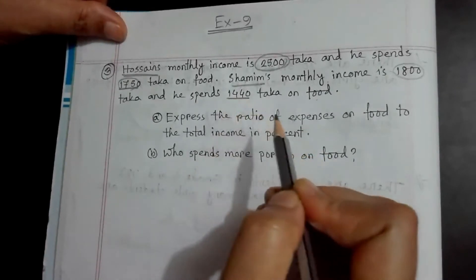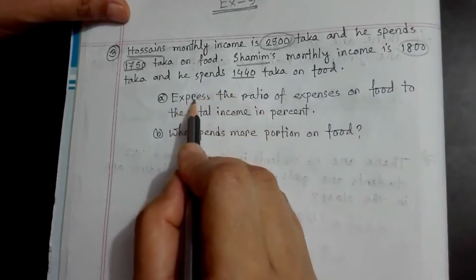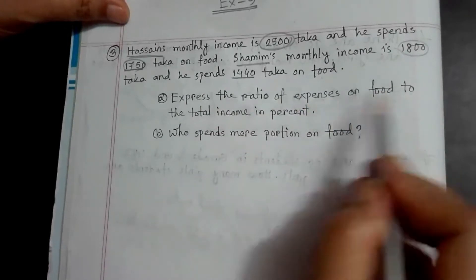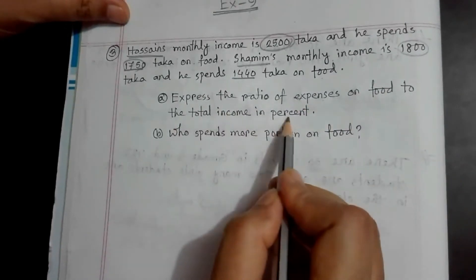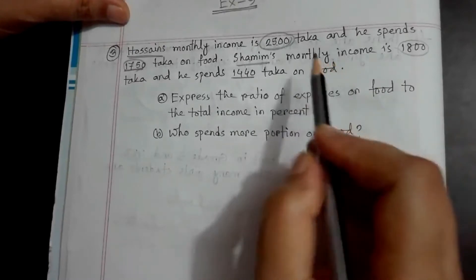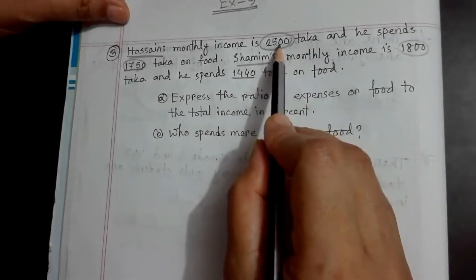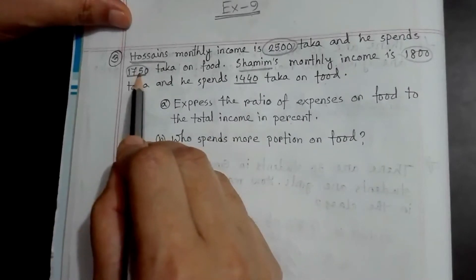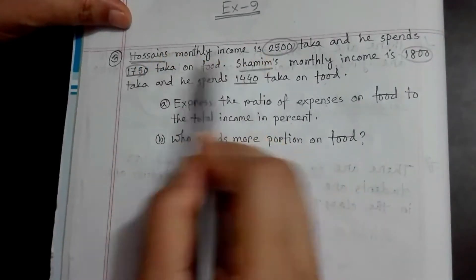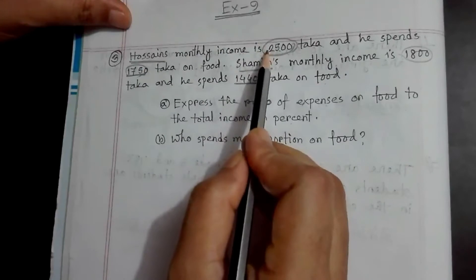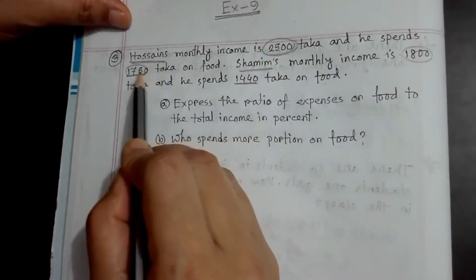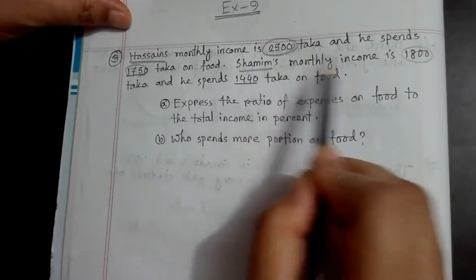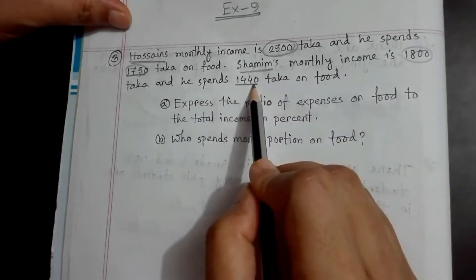The question is: express the ratio of expenses on food to the total income in percentage. Hosain's monthly income is 25,000 and food expense is 1,750. Shamim's monthly income is 1,800 and food expense is 1,440. The total income and the percentage for food expenses need to be found.